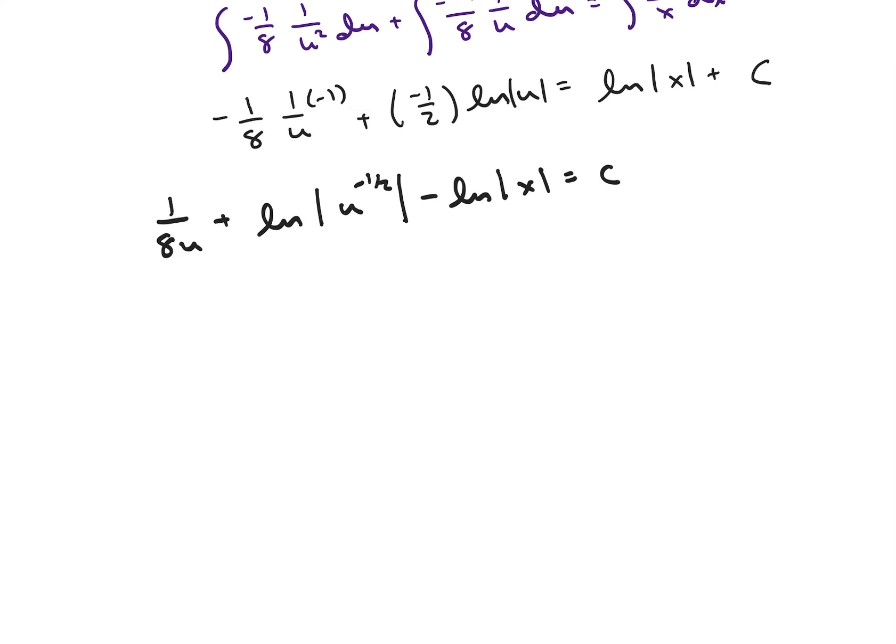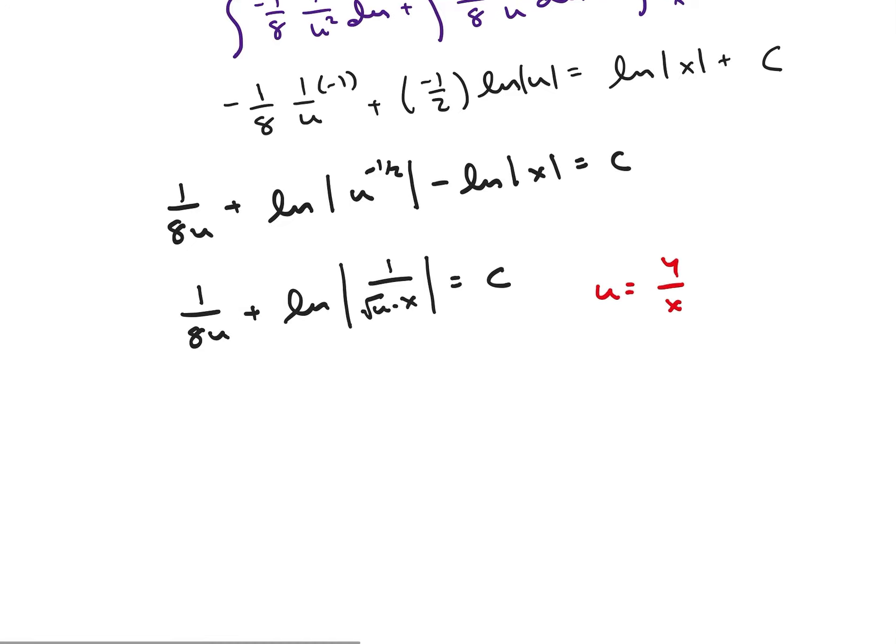I can combine those log terms to get 1 over 8u plus ln of 1 over square root of u times x is equal to a constant. And then I remember that u was equal to y over x, so I can perform that substitution.